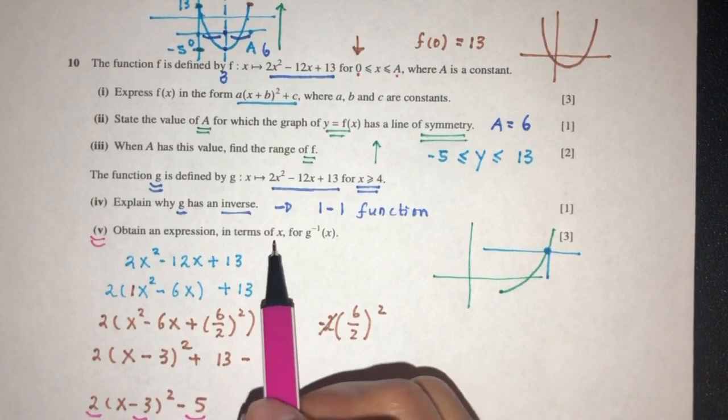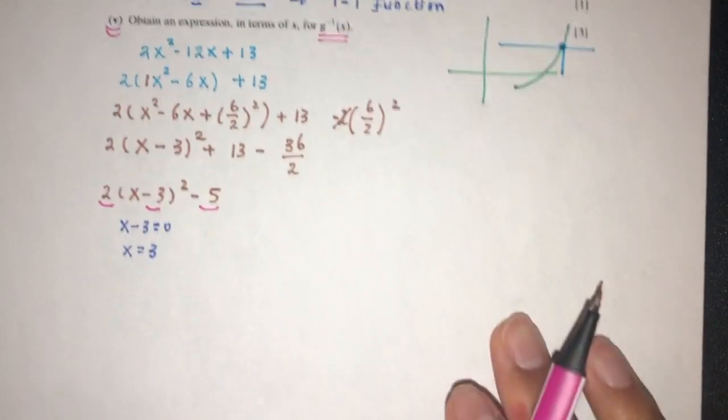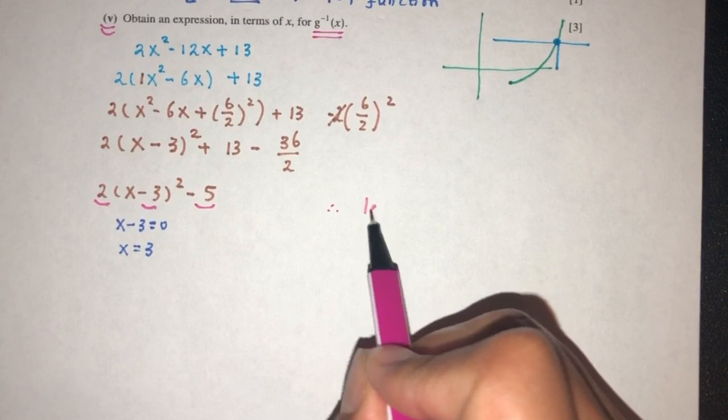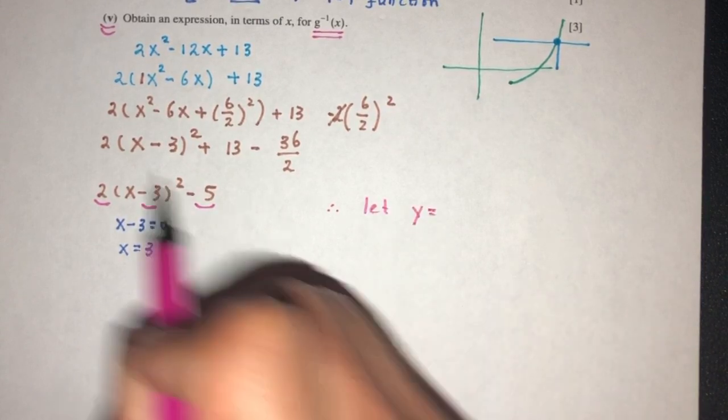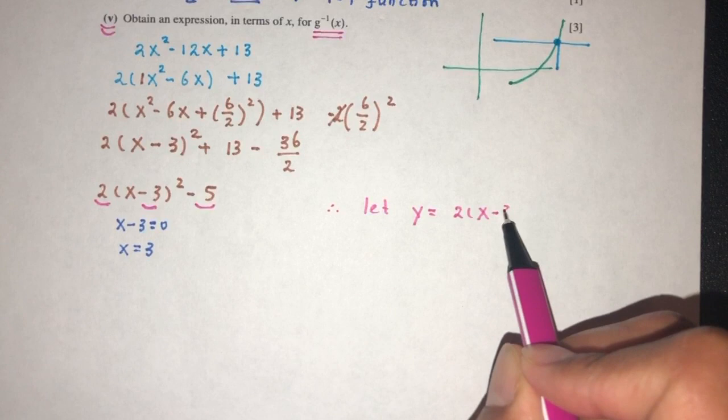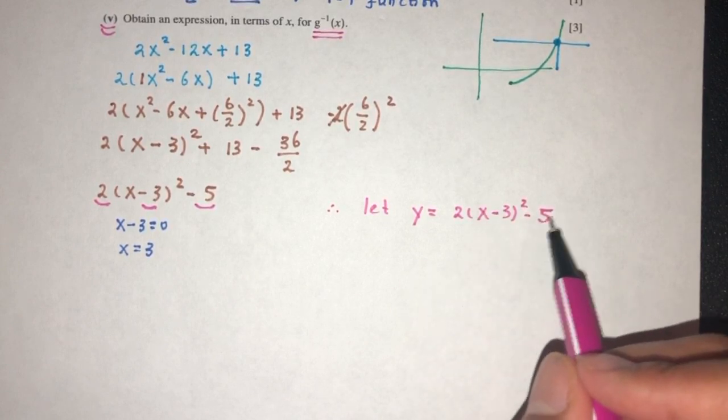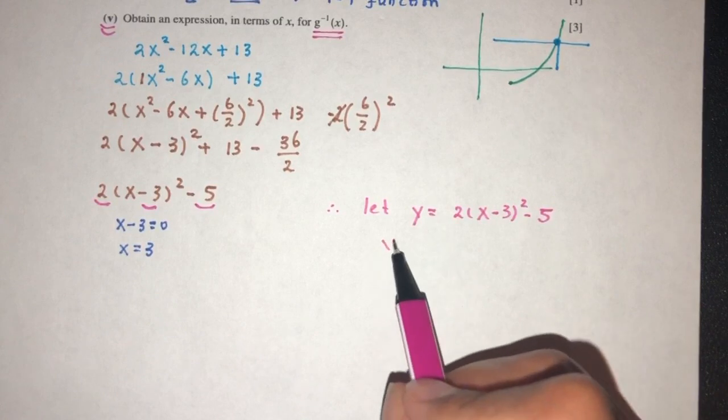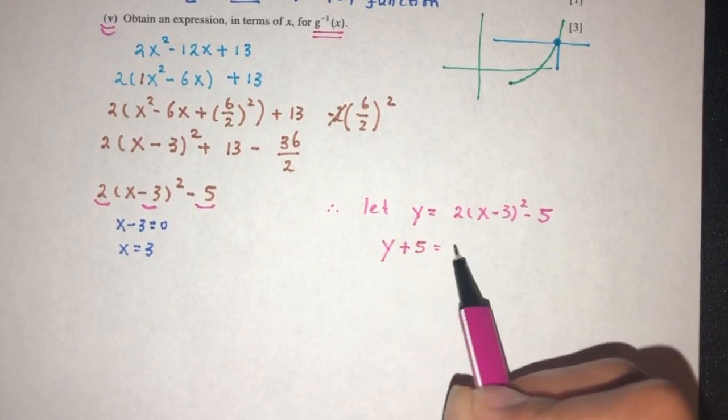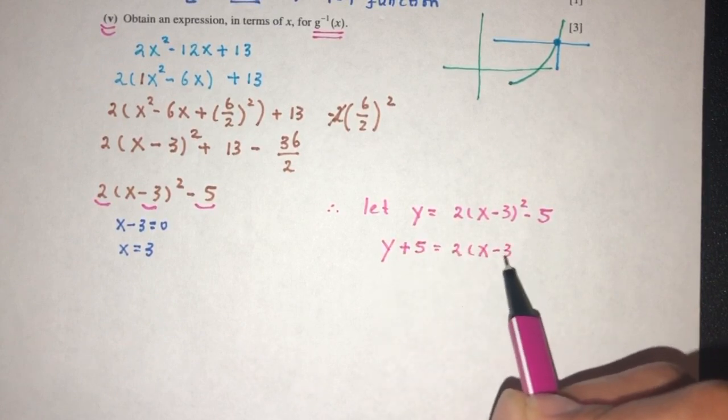Now part 4, obtain an expression in terms of x for g inverse of x. So step 1, let y equal to g of x, which is this one, 2x minus 3 square, minus 5. Now we have to make x become the subject. So first thing first, you have this plus 5, that will be 2x minus 3 square.